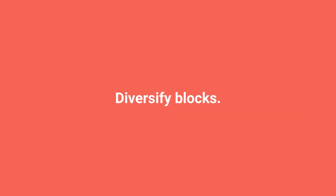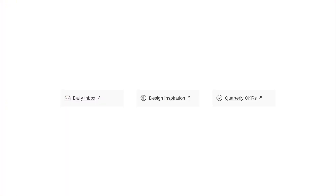You'll also want to diversify the types of blocks you use as much as you can. Block variation will enrich the aesthetic of your page and keep visitors engaged. Utilize Notion's full spectrum of blocks, including callouts, quotes, and toggles to the extent that your content allows. One trick is to use callout blocks for high-priority links — you can arrange them into columns and choose an icon for each one.